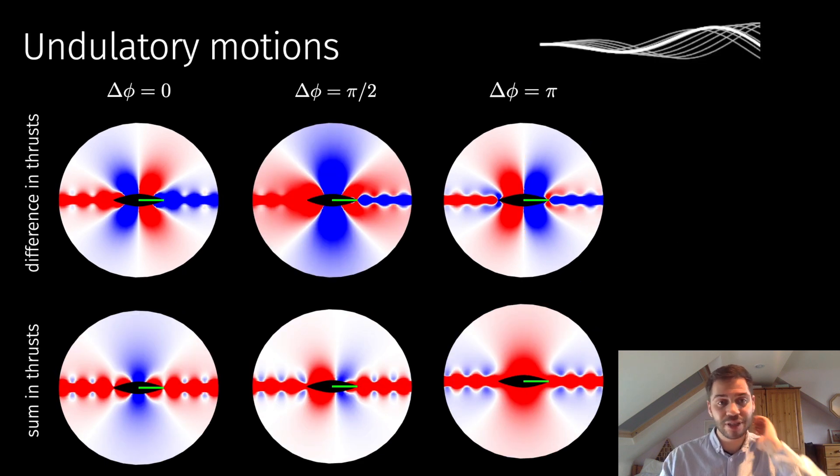Finally, I want to talk about undulatory motions, so this is when the wings are executing motions such as this. Because we're not constrained to just look at heaving motions in our model, they can be doing any motion, and you get some quite interesting plots where there's almost always an increase in efficiency or an increase in the sum of thrusts when they're undulating. Again, we see that the ground effect configuration is somewhat optimal.